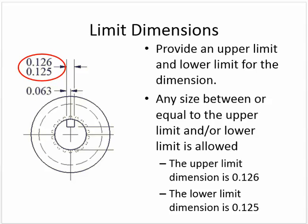Limit dimensions provide an upper limit and a lower limit for the dimension. Any size between or equal to the upper limit and lower limit is allowed. The upper limit here is 0.126, meaning this part could be as big as 0.126, and the lower limit is 0.125. So this cotter pin could be as small as 0.125. As long as whatever part they're making fits within those specifications, it's going to be acceptable and it will work.